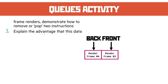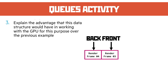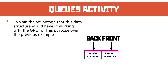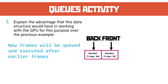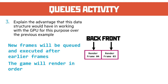Question 3: explain the advantage that this data structure would have in working with the GPU for this purpose. Well, compared to the previous example, a queue is a first in first out data structure, meaning that new frames will be queued and executed after the earlier frames. This will render the frames in order, meaning the game will be nice and smooth.